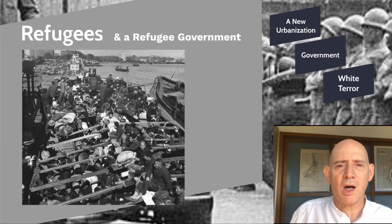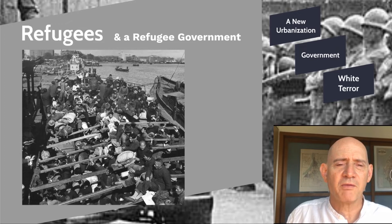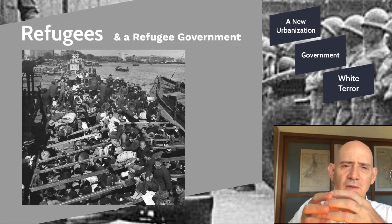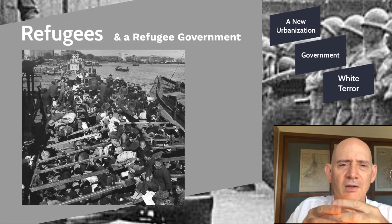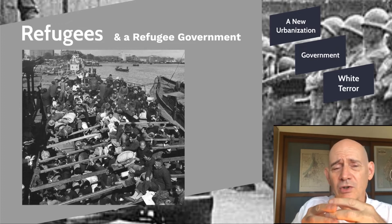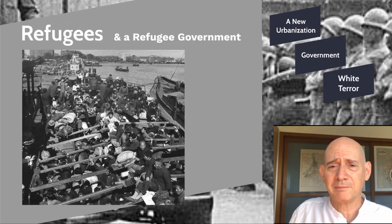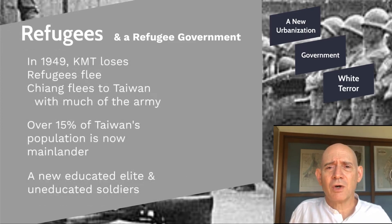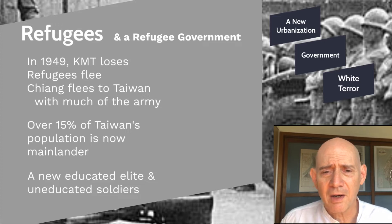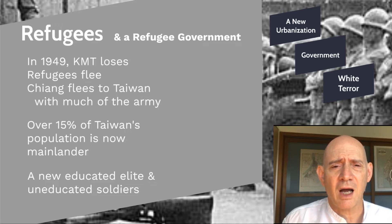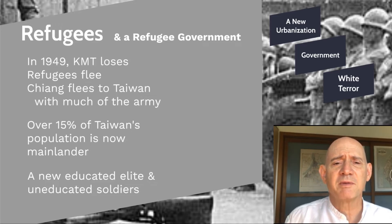During this period Taiwan has kind of two governments: the provincial government and the national government. But the Republic of China is now left with really just one province, so the national and provincial governments are very much overlapping. People would estimate that about 15% of Taiwan's population now becomes mainlander. Under the Japanese, the number of Japanese in Taiwan had gradually grown to just 6% by 1945. Now these outsiders from the mainland are 15% of the population.